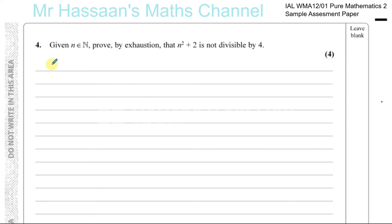It's pretty simple stuff, so no need to get panicked or worried. Given that n is an element of the natural numbers — meaning positive integers starting from 1, 2, 3, 4 and so on, the whole numbers which are always positive, 0 not included — prove by exhaustion that n squared plus 2 is not divisible by 4.